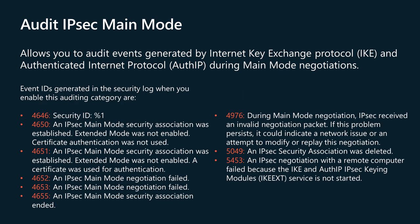The Audit IPsec Main Mode policy allows you to audit events generated by Internet Key Exchange Protocol and Authenticated Internet Protocol during main mode negotiations. This policy is useful for diagnosing problems if you are troubleshooting IPsec if other avenues don't work. Event IDs generated in the security log when you enable this auditing category are displayed on the screen. More detail is available in the article linked below.